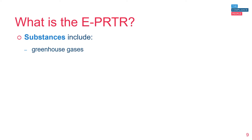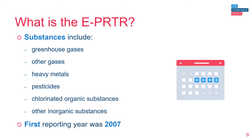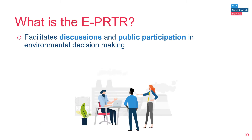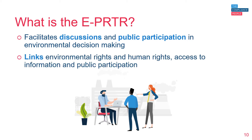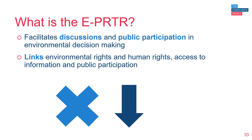Substances include greenhouse gases, other gases, heavy metals, pesticides, chlorinated organic substances and other inorganic substances. The first reporting year under the EPRTR was 2007. It helps to facilitate discussions and public participation in environmental matters and decision making, linking environmental rights and human rights, access to information and public participation in line with the Aarhus Convention. Essentially, it helps to support the prevention and reduction of pollution.